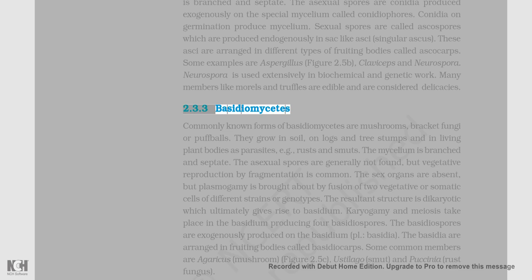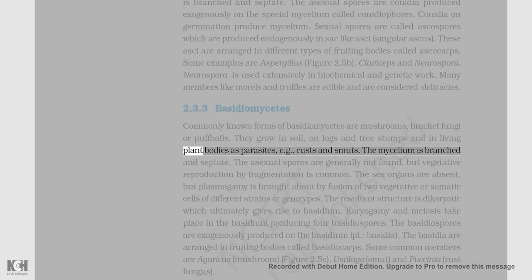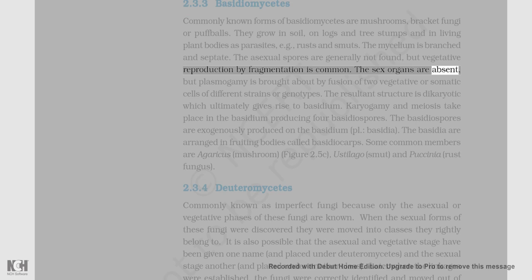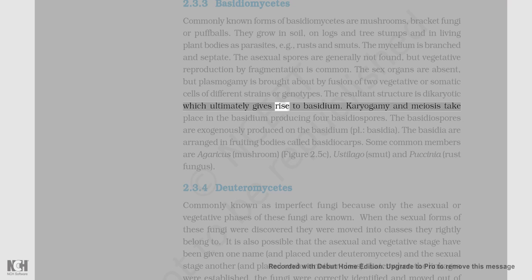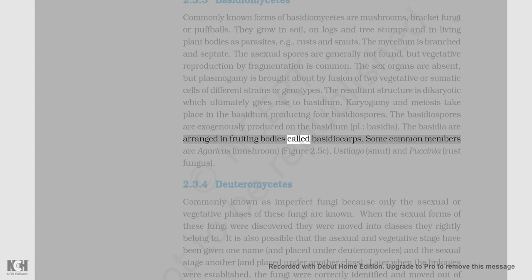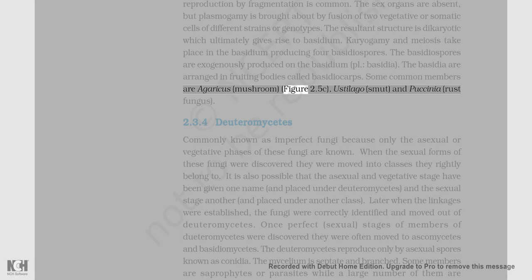III. Basidiomycetes: Commonly known forms of basidiomycetes are mushrooms, bracket fungi, and puffballs. They grow in soil, on logs and tree stumps, and in living plant bodies as parasites, e.g., rusts and smuts. The mycelium is branched and septate. Asexual spores are generally not found, but vegetative reproduction by fragmentation is common. Sex organs are absent, but plasmogamy is brought about by fusion of two vegetative or somatic cells of different strains or genotypes. The resultant structure is dikaryotic, which ultimately gives rise to basidium. Karyogamy and meiosis take place in the basidium, producing four basidiospores. The basidiospores are exogenously produced on the basidium (pl. basidia). The basidia are arranged in fruiting bodies called basidiocarps. Some common members are Agaricus (mushroom, Figure 2.5c), Ustilago (smut), and Puccinia (rust fungus).